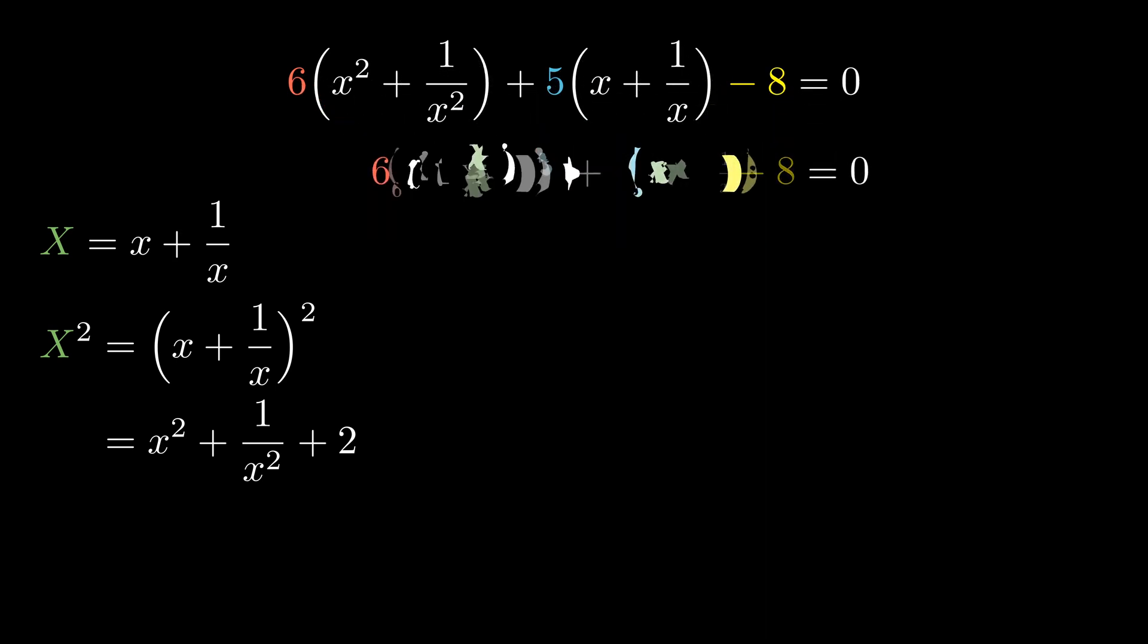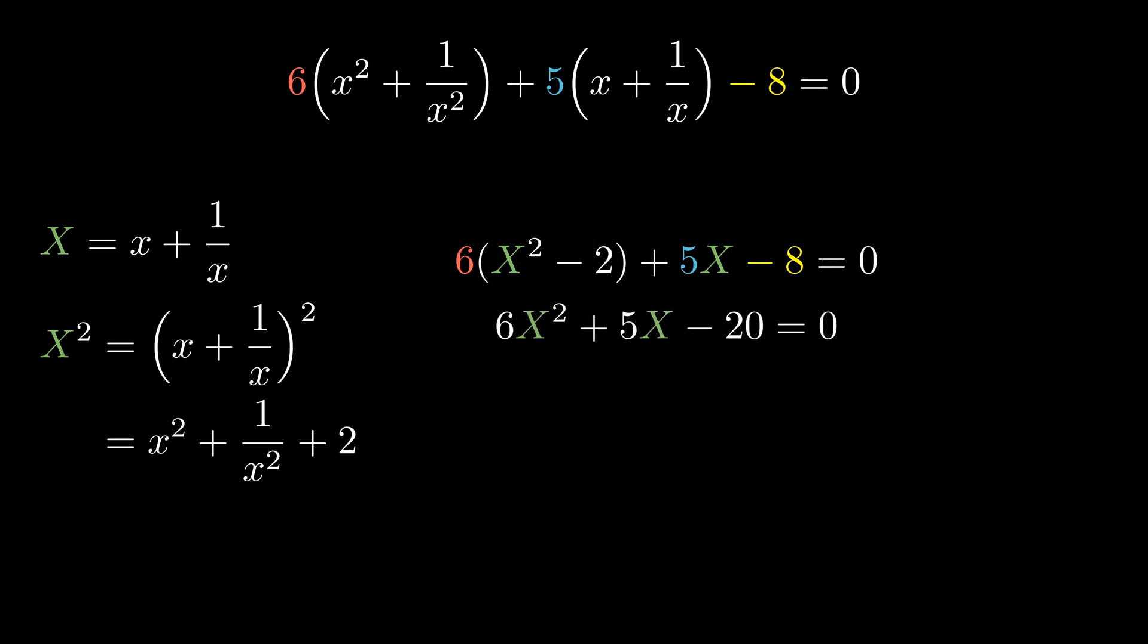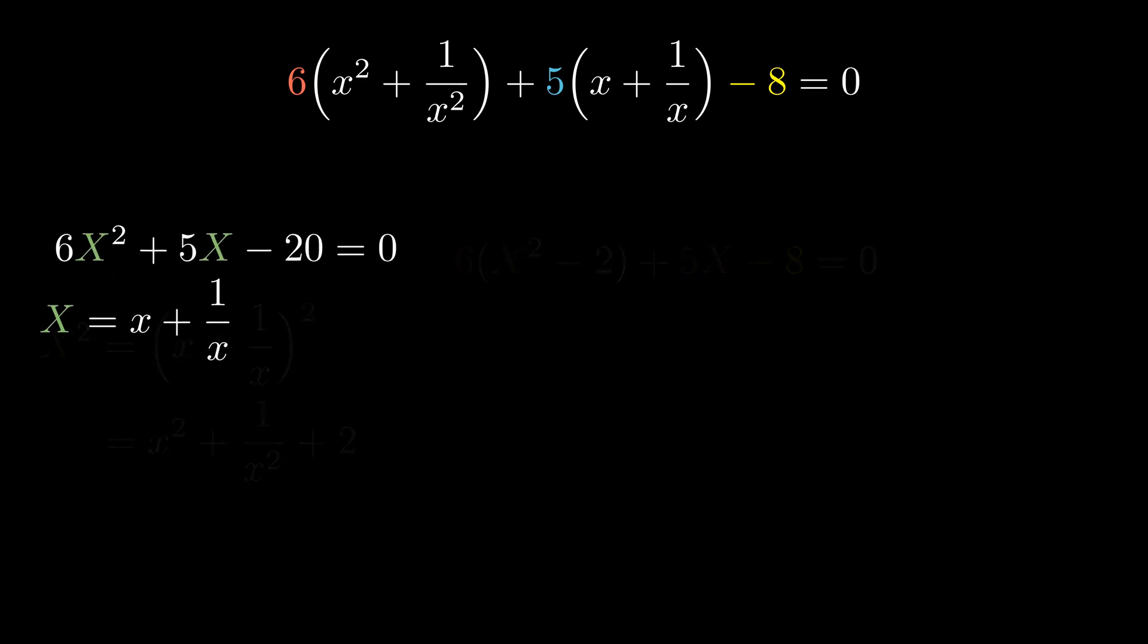Therefore, we can rewrite our equation as 6 times X squared minus 2 plus 5X minus 8, which simplifies to 6X squared plus 5X minus 20.